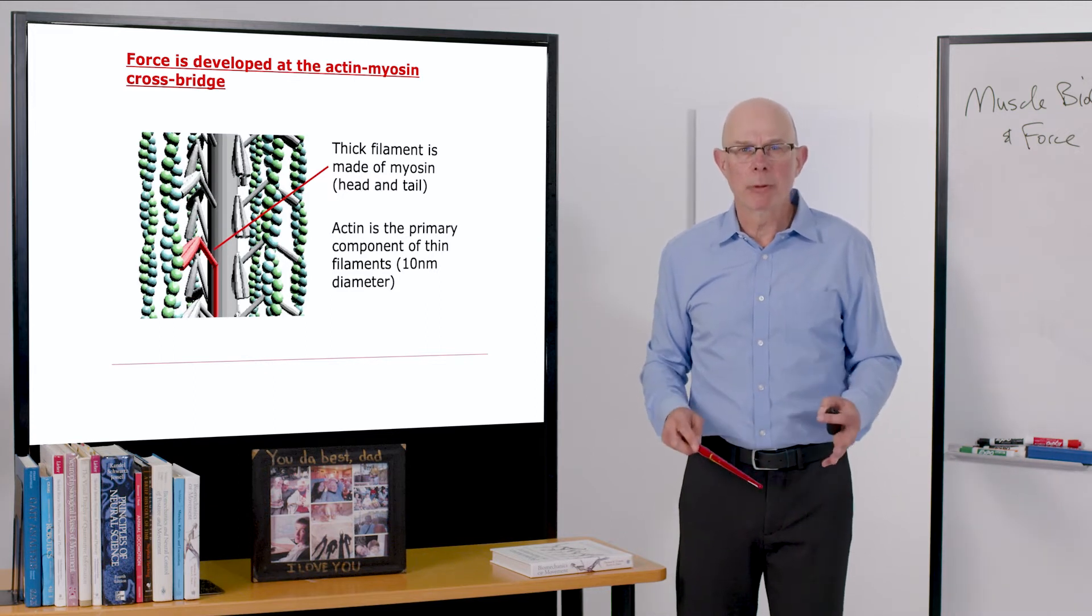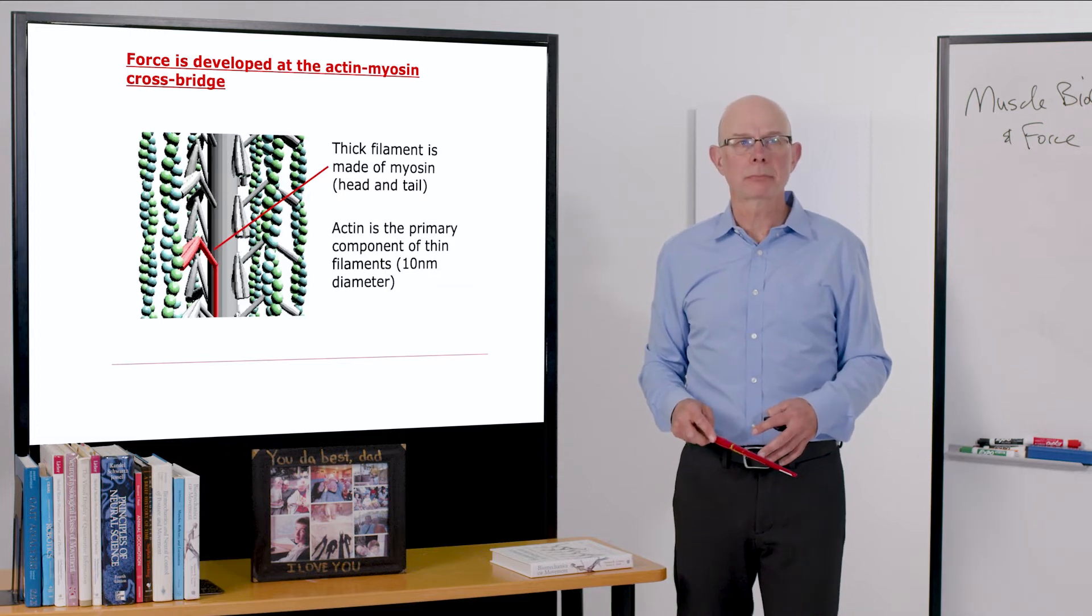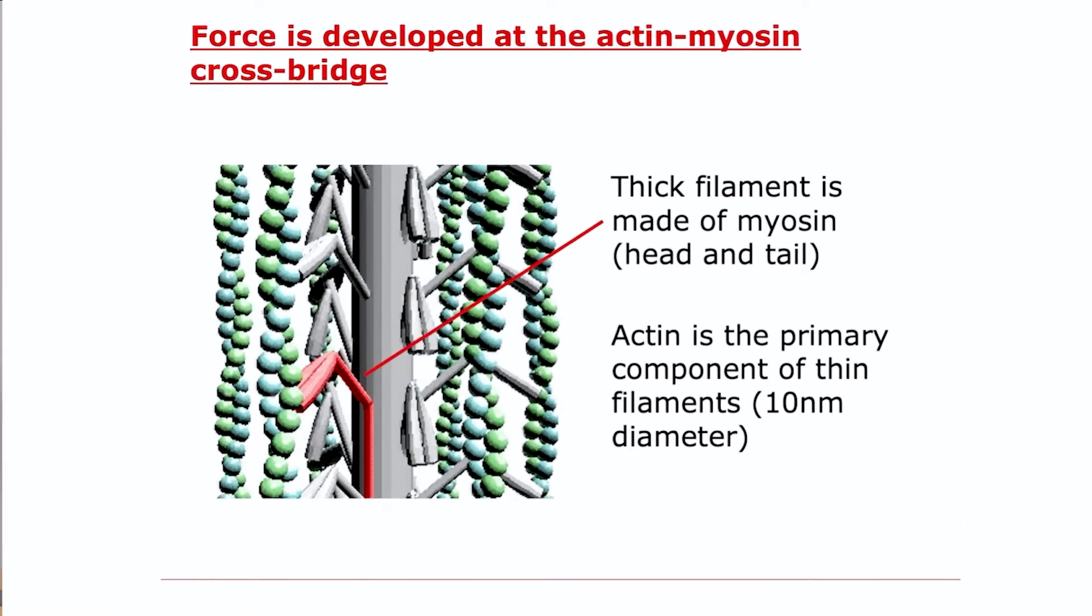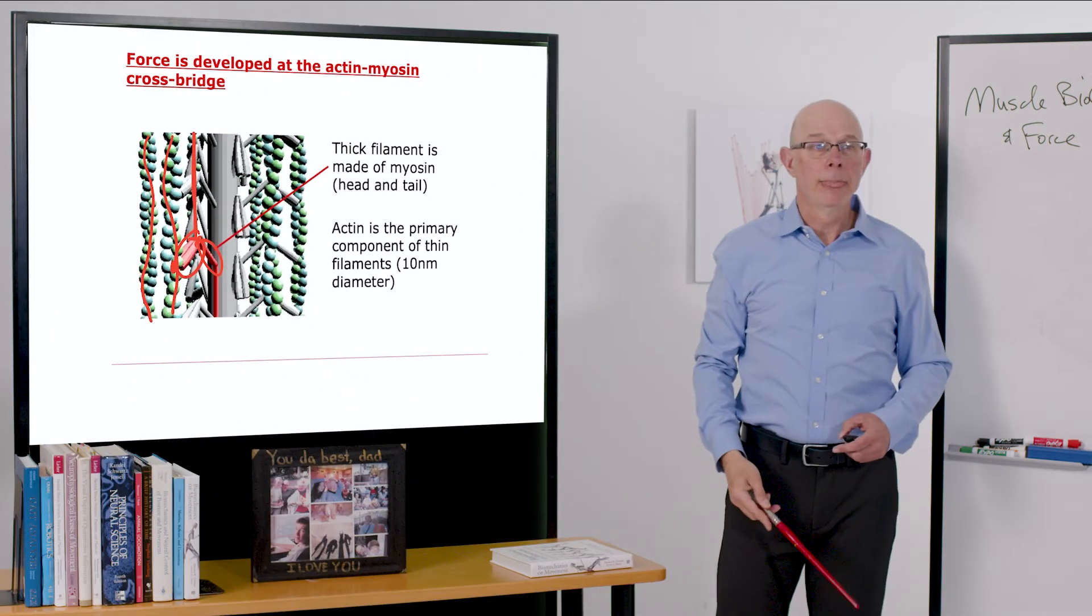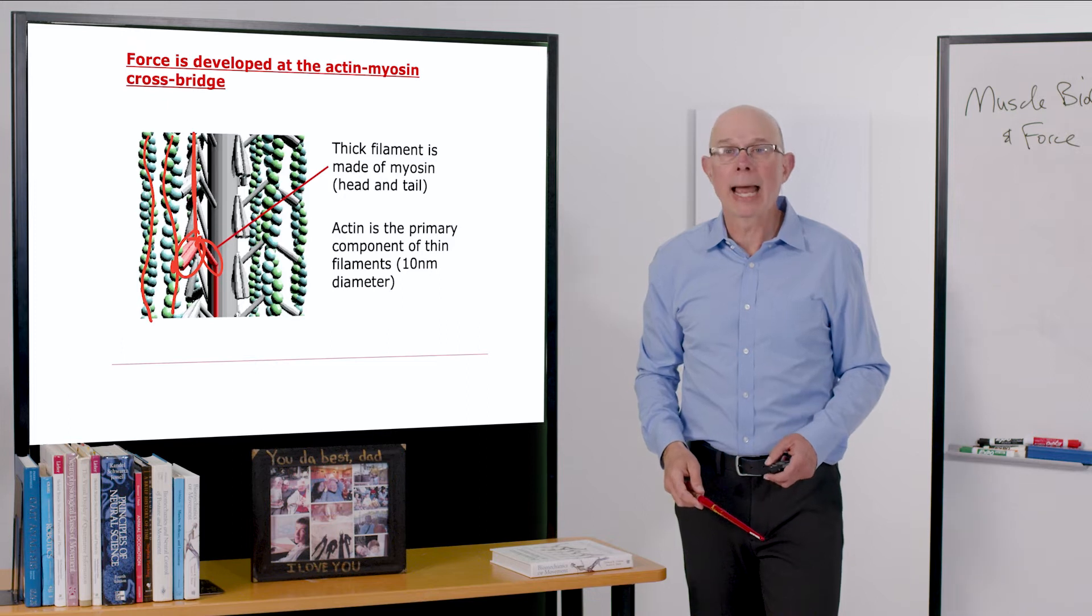The basic mechanism of force development happens at this actin-myosin crossbridge. So the thick filament is made up of myosin. And what you can see is the myosin head and the myosin tail. That myosin head is interacting with an actin filament. Shown in green here are the helical actin filaments. You can see the myosin head is interacting with the actin filament. Now, these actin filaments are quite small. They're diameters on the order of 10 nanometers.